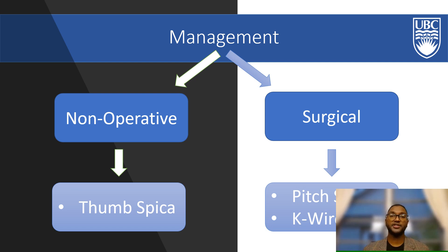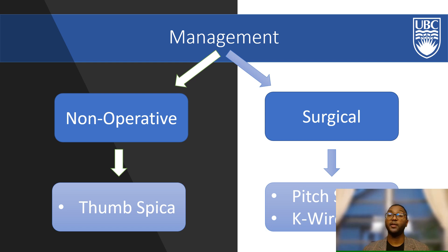Management for scaphoid fracture can be roughly broken into two major pathways, one of which is non-operative, the other being surgical. The most common interventions for each management type are shown on this slide and we explore these in more detail in the following slides. As an important note, it is important we speak with patients to discuss the advantages and disadvantages, possible risks and benefits of each procedure type when discussing reasonable treatment options.